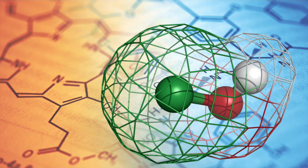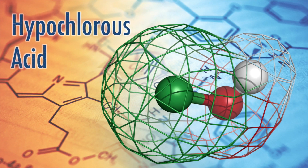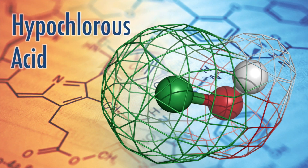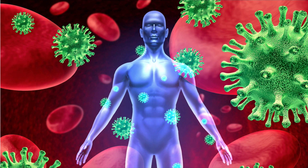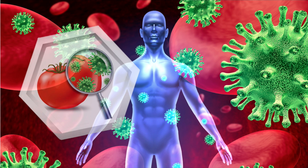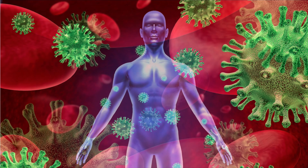The active ingredient in the resulting solution is hypochlorous acid, a naturally occurring acid also found in the human body's response to fighting infections. The hypochlorous acid in anolyte can serve much the same purpose outside the human body as the naturally occurring acid does inside the human body.